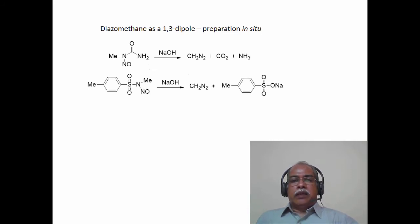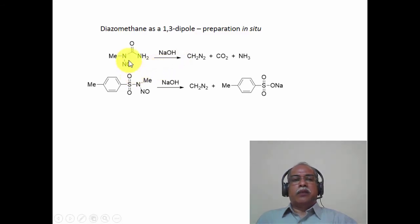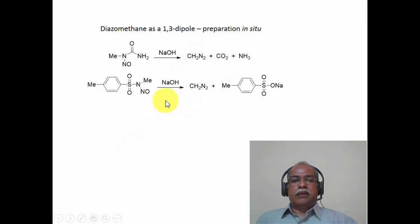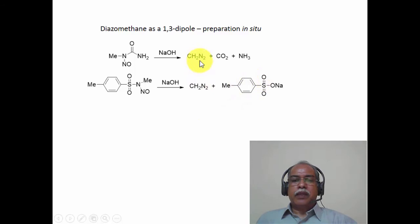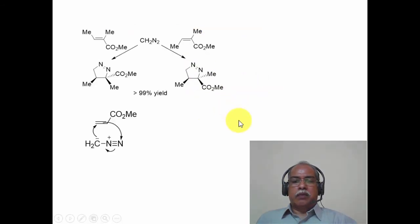Diazomethane is an excellent 1,3-dipole and is very widely used in the synthesis of heterocyclic systems. Diazomethane itself is a very reactive intermediate — it must be formed in situ and cannot be stored, as it undergoes slow decomposition. N-nitroso-N-methyl urea reacts with sodium hydroxide to produce diazomethane, carbon dioxide, and ammonia. Alternatively, N-nitroso-N-methyl-p-toluenesulfonamide is hydrolyzed using sodium hydroxide to produce diazomethane and sodium p-toluenesulfonate. The diazomethane produced is dissolved in organic solvent for further reaction.